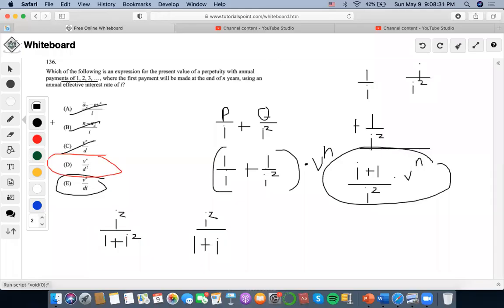Yeah, this is a controversial problem. So the answer choice said that it was D, but I believe that the answer is E because it says that there are perpetuity annual payments of this amount.